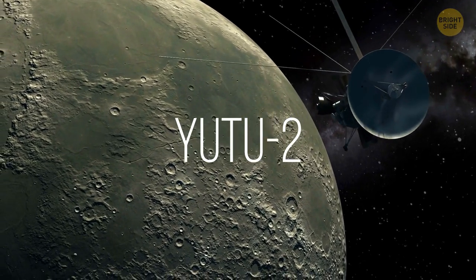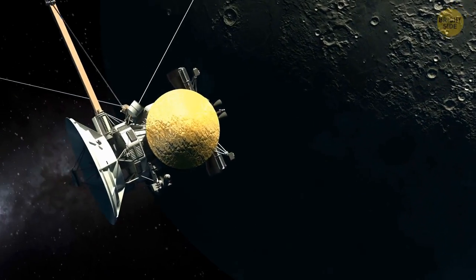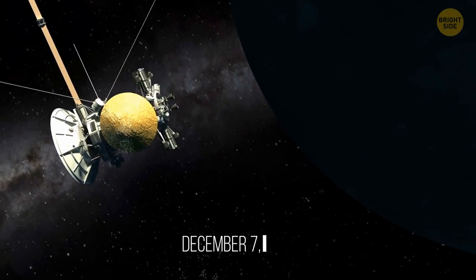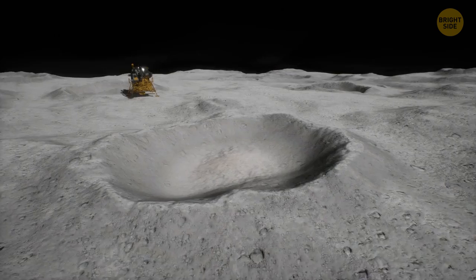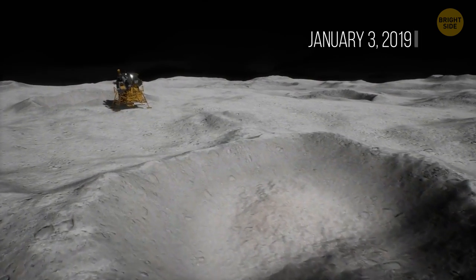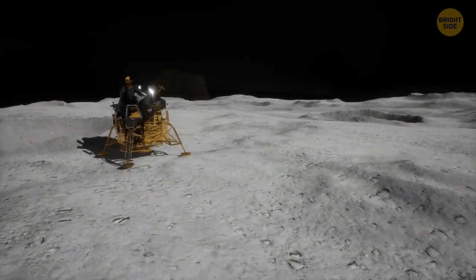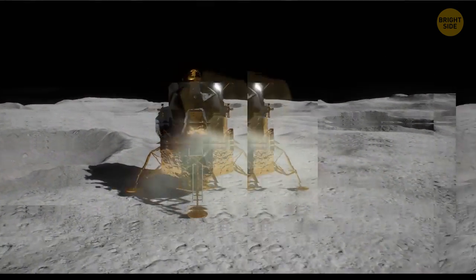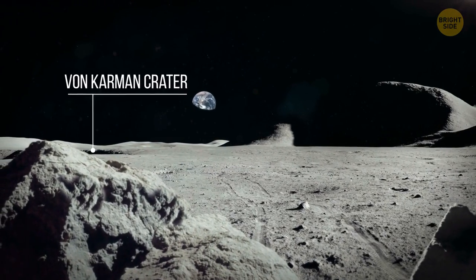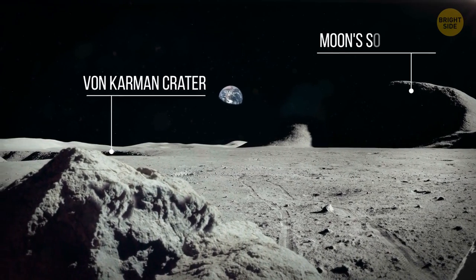China's Chang'e-4 is a robotic mission to the dark side of the Moon, launched on December 7, 2018. On January 3, 2019, it completes the first ever soft landing on the lunar far side. It lands in the Von Karman Crater, not far from the Moon's South Pole.